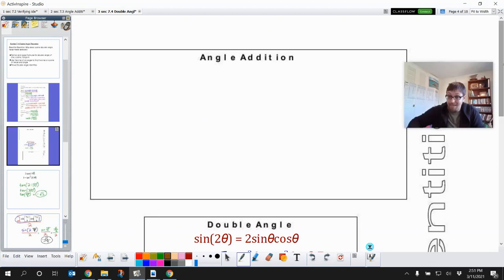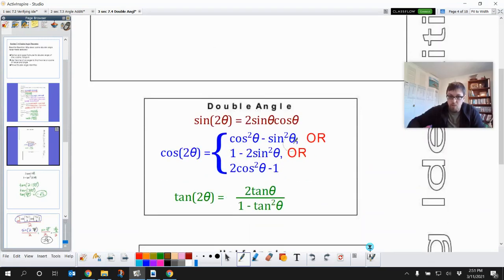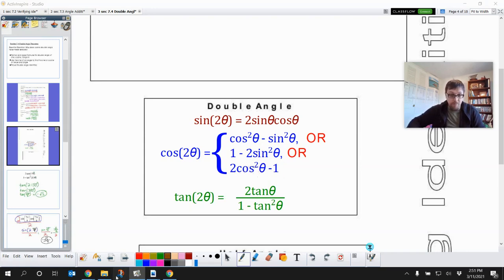Now, we get options, remember, with cosine. We can choose whichever one of these we want. So I could do this one and I need cosine and sine. Or I could do this one that I only need to know what sine is. Or I could do this one where I only need to know what cosine squared is. Okay, so here we've got it. So which one of these do we want to use?